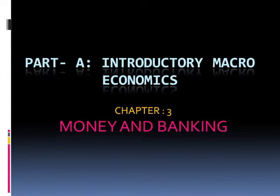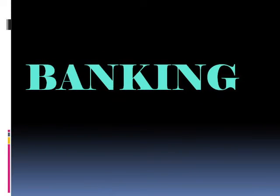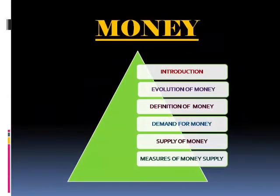Welcome students. We are going to analyze 12th Economics Part A, Introductory Macroeconomics, Chapter Number 3: Money and Banking. This chapter is divided into two parts — the first one is about money, covering introduction, evolution of money, definition of money, demand for money, supply of money, and measures of money supply.